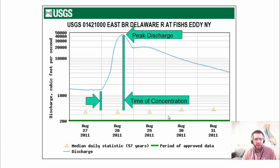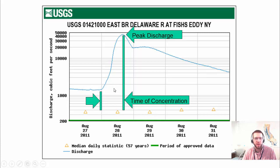I mentioned hydrographs before. A hydrograph just shows the flow rate in a stream over time. We're going to be developing hydrographs for a set amount of time, typically a design storm length. This example is for the East Branch Delaware River after Hurricane Irene. Before the flows reached the gauge, it was just over a thousand CFS. Then once all the water in the watershed got down to the gauge, it reached a peak, and after the storm was over, it gradually settled down.